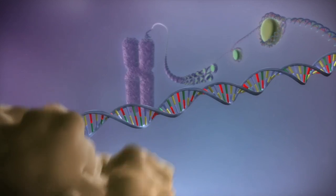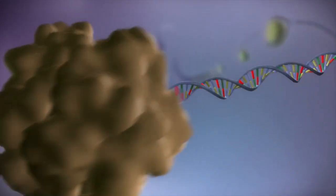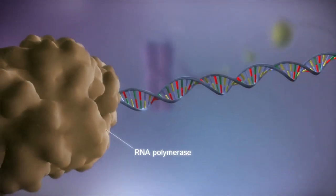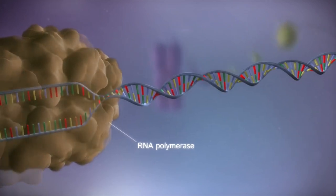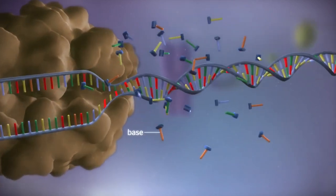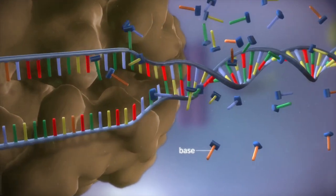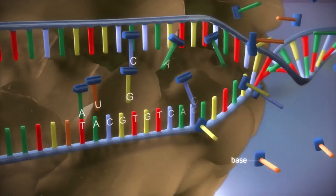When a gene is switched on, an enzyme called RNA polymerase attaches to the start of the gene. It moves along the DNA, making a strand of messenger RNA out of free bases in the nucleus.